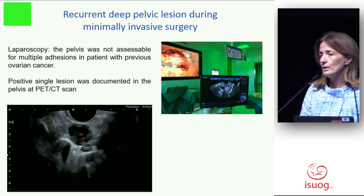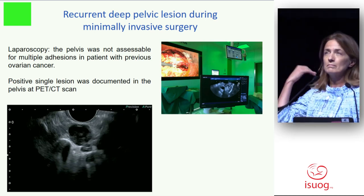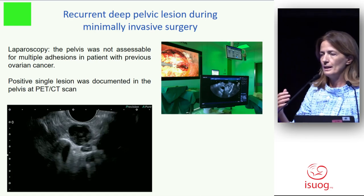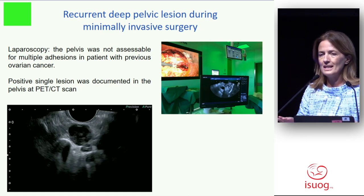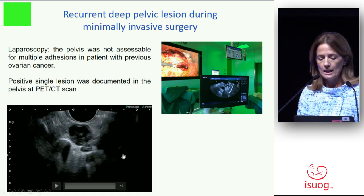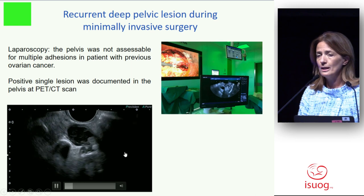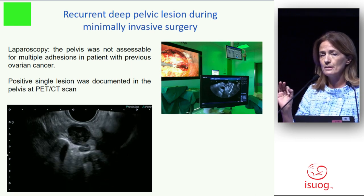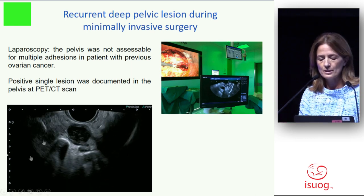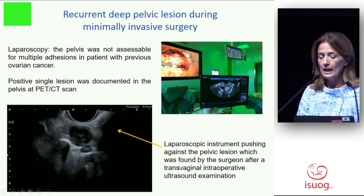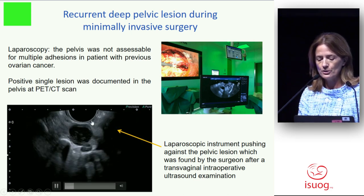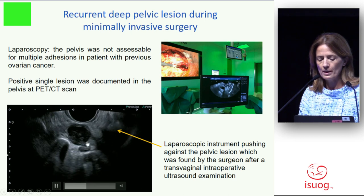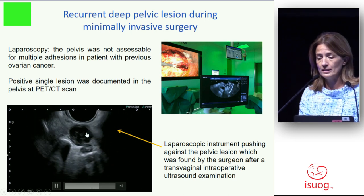An example of recurrent deep pelvic lesion: after surgery, after radiotherapy, sometimes you start with laparoscopy but the pelvis is obliterated because of severe adhesions. In this patient, the woman underwent surgery because a small lesion deep in the pelvis was detected at PET-CT. The surgeon couldn't detect it, so we guided using the transvaginal approach — you can see the instrument there — and we guided the surgeon to find it.